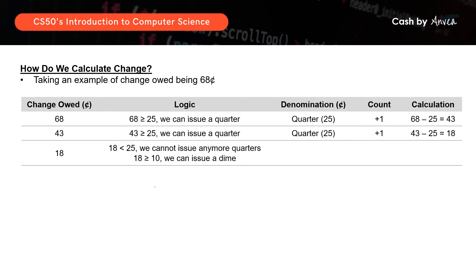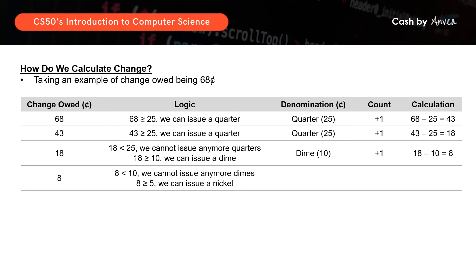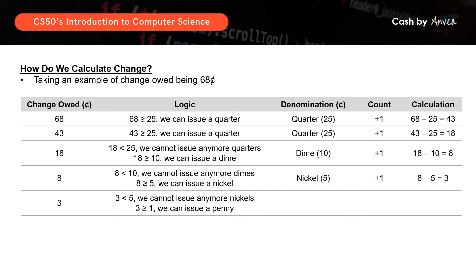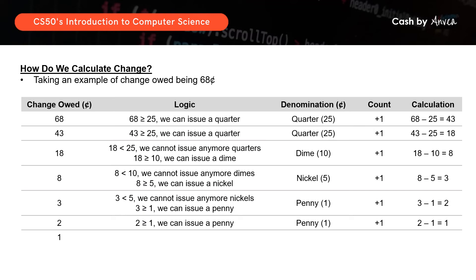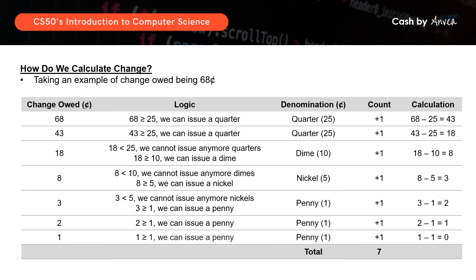Since 18 is more than 10, we can actually issue a dime. We've added another coin to our stash, and the balance is now 18 minus 10, which gives you 8 cents. Since 8 is now less than 10, we cannot issue any more dimes. But since 8 is greater than 5, we can now issue a nickel — we add one more coin to our stash. The balance is 8 minus 5, which gives you 3 cents left. Since 3 is less than 5, we cannot issue any more nickels. But since 3 is greater than 1, we can issue a penny. We'll do this a few more times until we issue two more pennies, until the balance is zero. So that means we've actually issued all the coins needed. The total would be 7 coins.